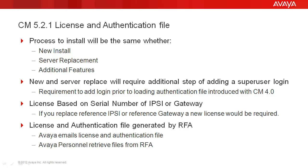Basically, the process to install the license file and authentication file is the same whether it's a brand new install, a server replacement, or you're just adding additional features. There is one slight caveat: if it's a new install or possibly a server replacement and it's CM 4.0 and later, you'll have to create a super user login prior to loading the authentication file. The license is based on a serial number of either an IPSE or a gateway. That IPSE or gateway will be referred to as a reference IPSE. If you replace the reference IPSE or the reference gateway, you will have to go to either RFA or PLDS and do a serial number swap and probably load a new license file.